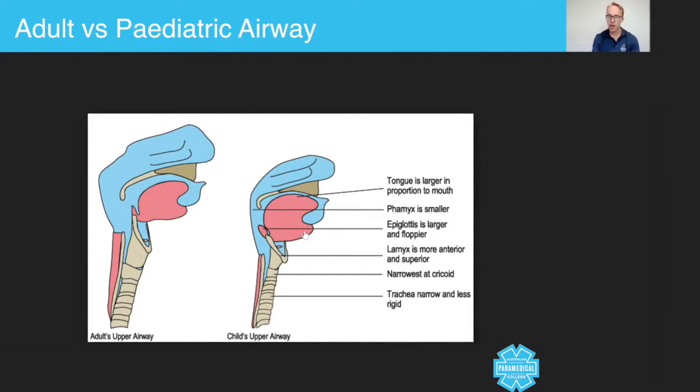tongue is much larger in proportion to the size of the mouth. What that means to you as paramedics is that the child is more likely to have an upper airway obstruction caused by the tongue. So you need to